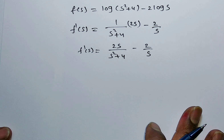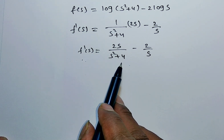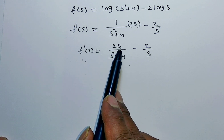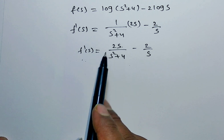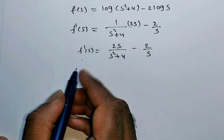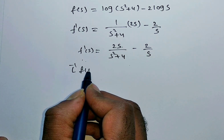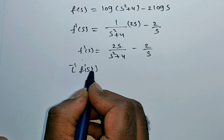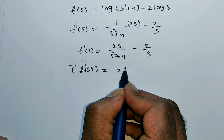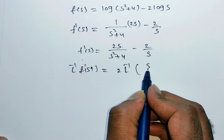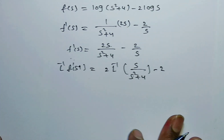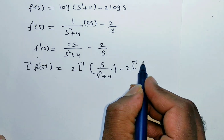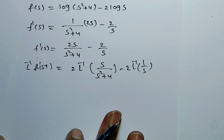Now we can apply inverse Laplace on both sides since the right side has standard forms. Applying L inverse: L inverse of F dash of S equals 2 times L inverse of S by S squared plus 4, minus 2 times L inverse of 1 by S.